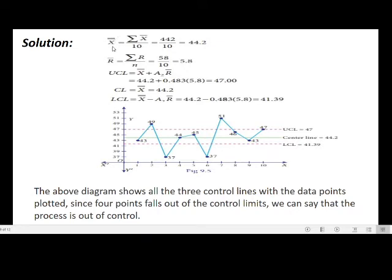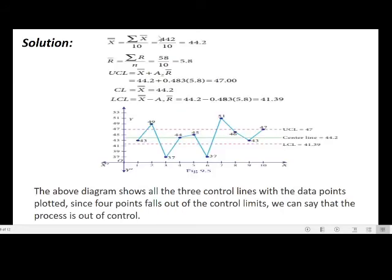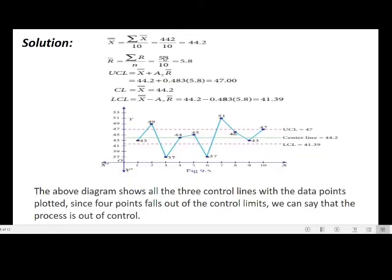Calculations: x double bar = Σx / 10. The total of sample means is 442, so x double bar = 442 / 10 = 44.2. R̄ = ΣR / n. The total of ranges is 58, so R̄ = 58 / 10 = 5.8. Now computing the UCL for the mean chart: UCL = x double bar + A₂ × R̄.